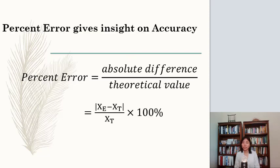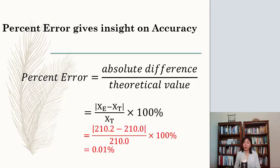There's a difference between the mean value we get and the true value. It gives insight on accuracy. So it is the difference of the experiment data mean and true value divided by true value times 100%. Be careful that we put an absolute value. For the A4 paper, we have 210.2 minus 210 divided by 210 times 100%. So we get 0.01% difference. That's the percent error.